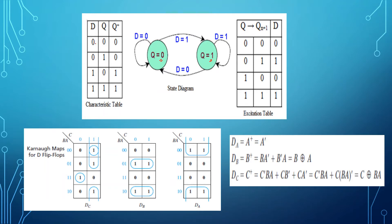Referring to the characteristic table: if Q is the present state and I want the next state to be 0, the input given is 0 itself — since the D flip-flop is a transparent flip-flop. If 1 is the present state and I want the next state to be 0, the input given is 0. If 0 is the present state and I want the next state to be 1, the input given is 1. If 1 is the present state and the next state should also be 1, the input given is 1. This is represented in the excitation table, and the same is copied to the transition diagram.